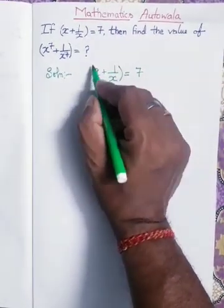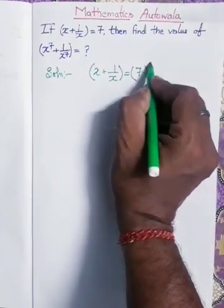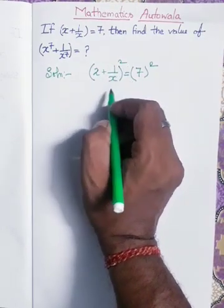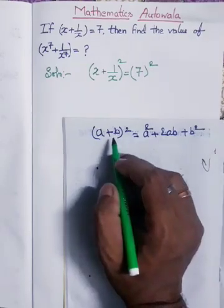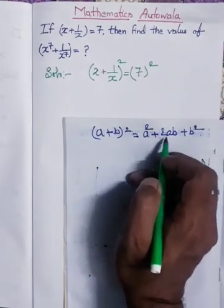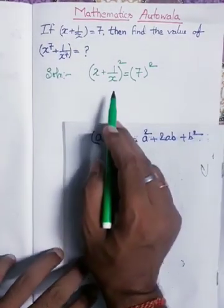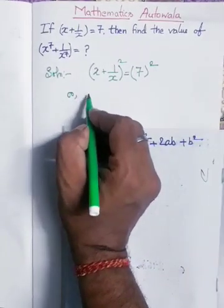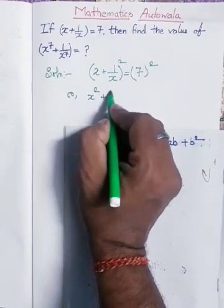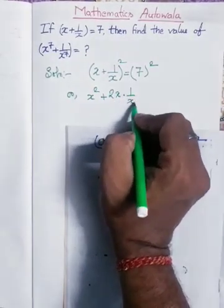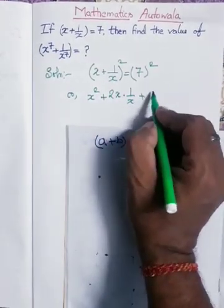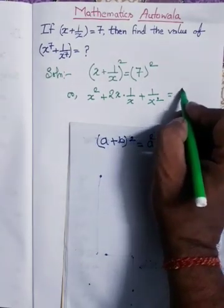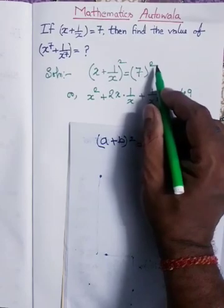Now I am doing squaring on both sides. This is in the formula a plus b whole square. The formula of a plus b whole square is a square plus 2ab plus b square. Breaking this: x square plus 2 times x times 1 by x plus 1 by x square is equal to 7 squared, that is 49.